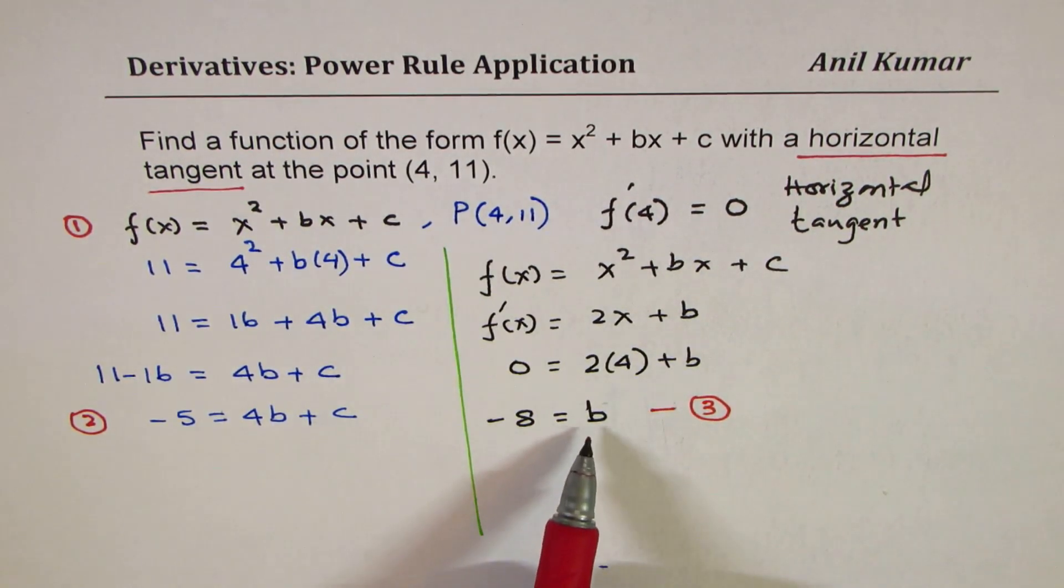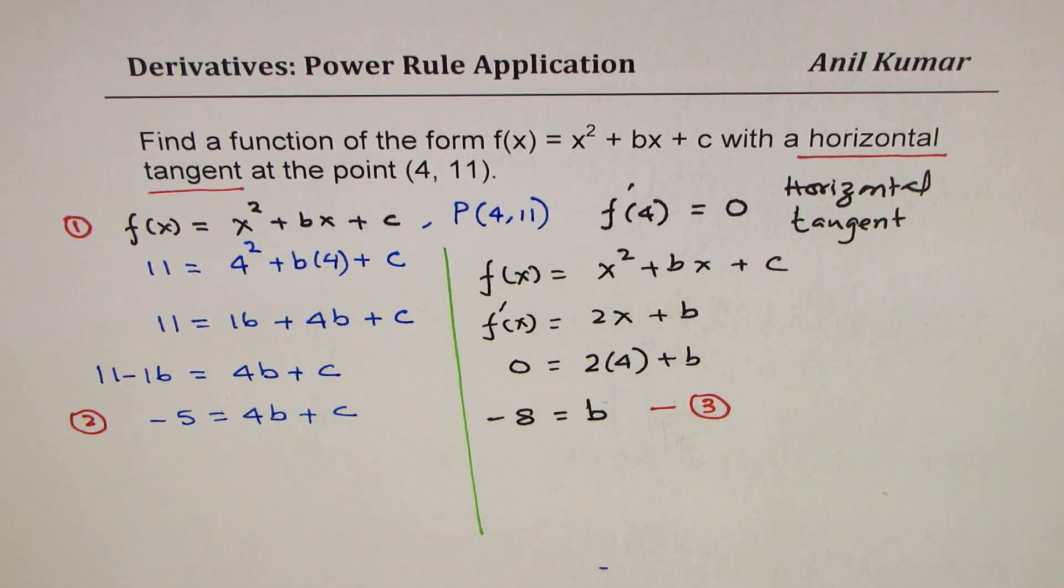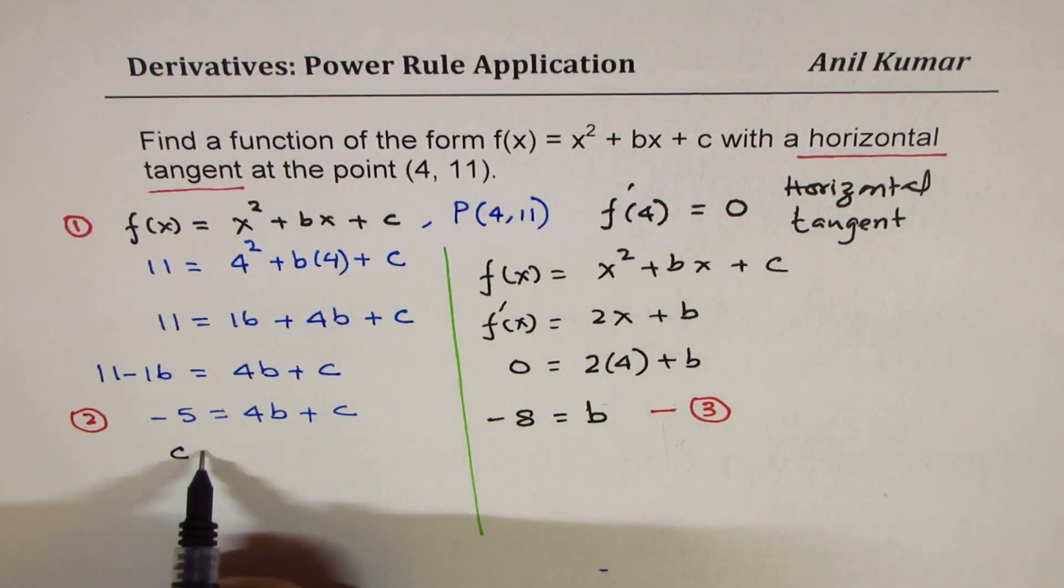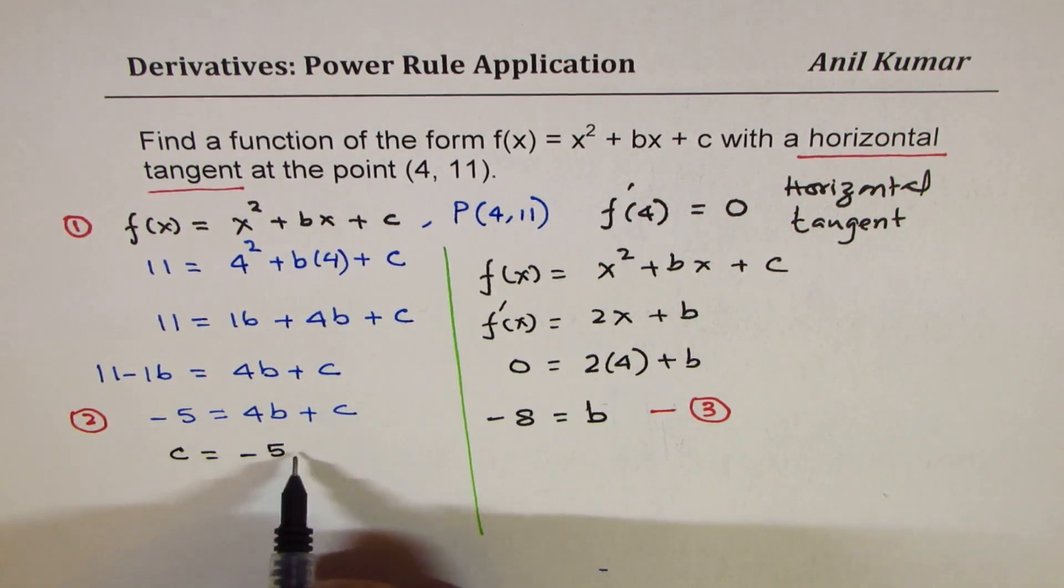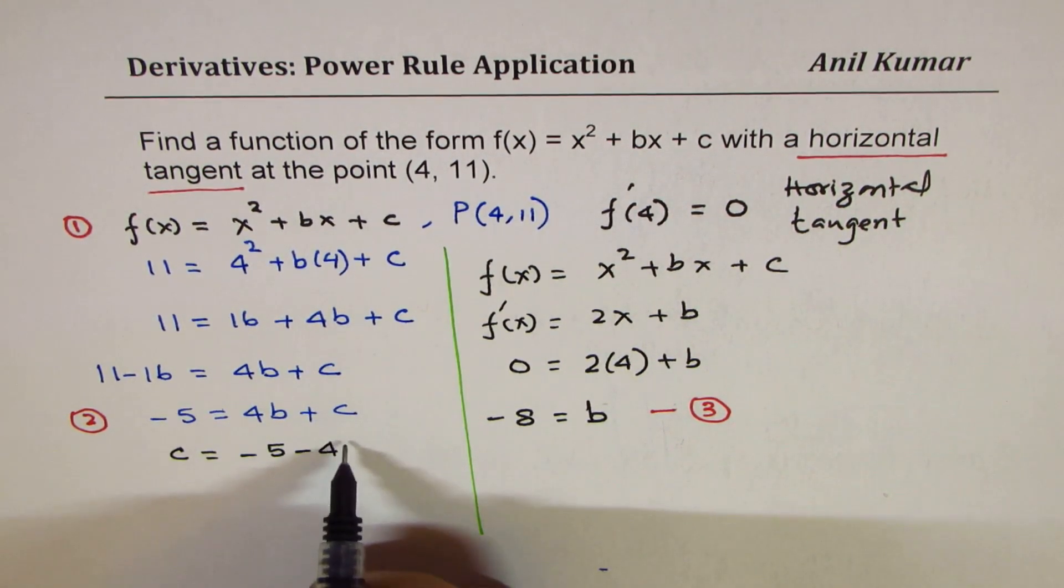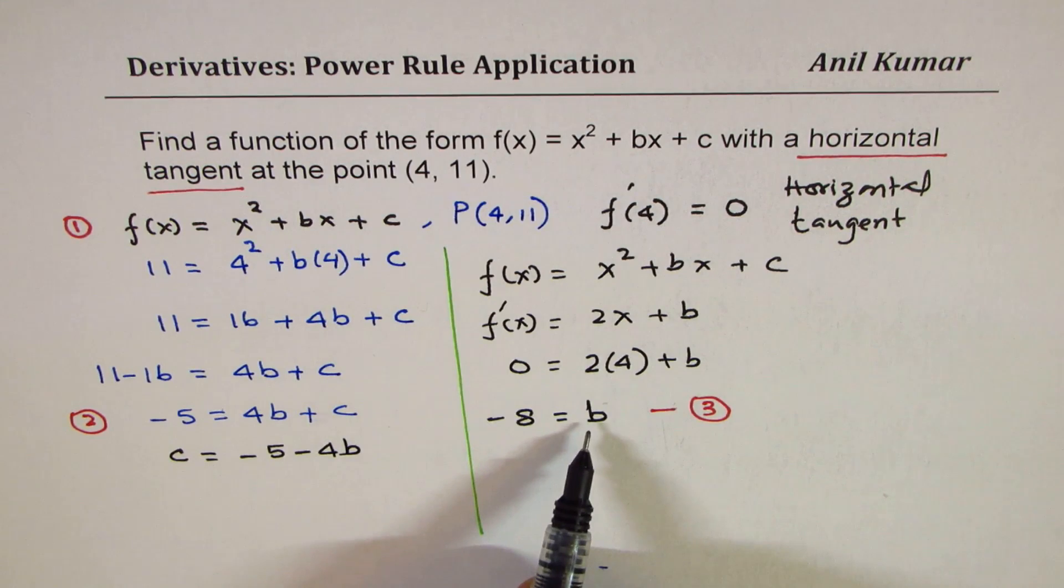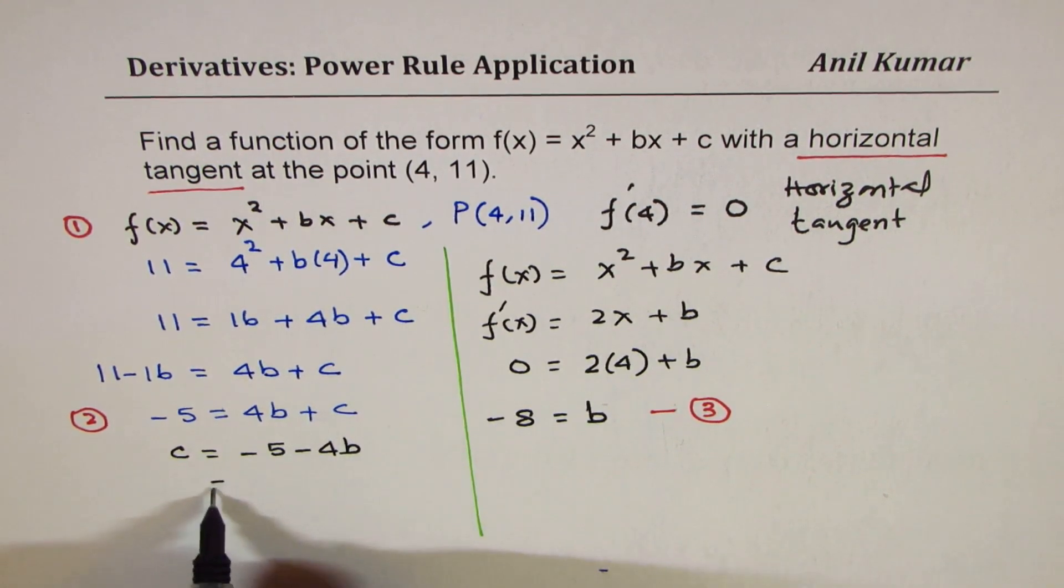Now, you can substitute b to find c. So from this equation, you could write c = -5 - 4(b). Since you know b is -8, what is c equal to?